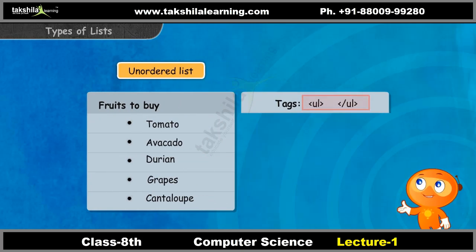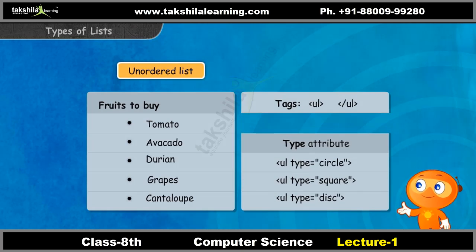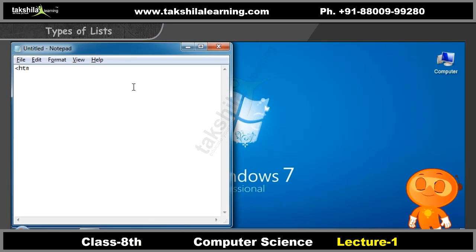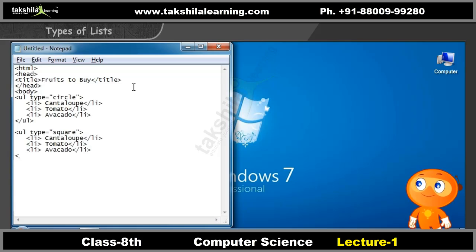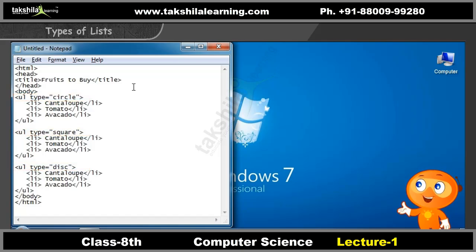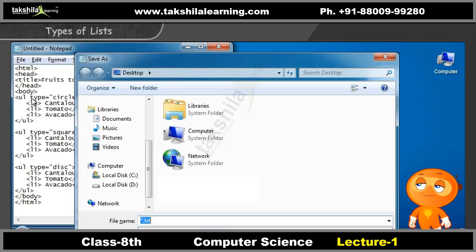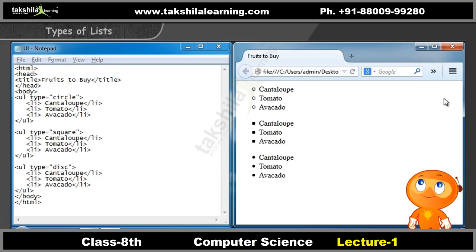You can use the UL tags shown on screen to define an unordered list. You can also specify different types of bullets as the list element using the type attribute in the tag. For example, if you use the code shown on screen in your program, you can see the list using different bullets. The output displayed will be as shown here.